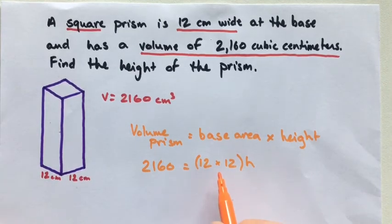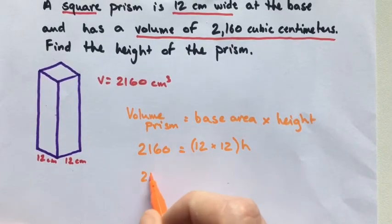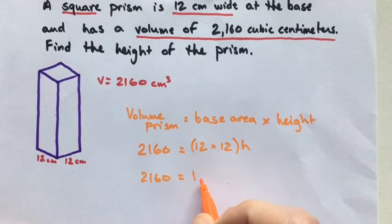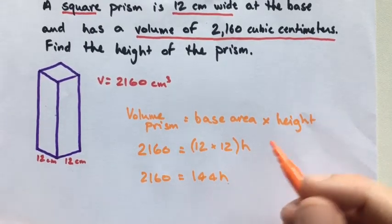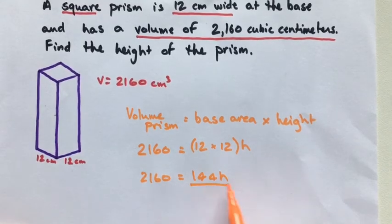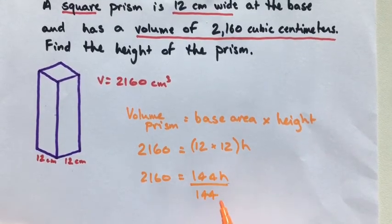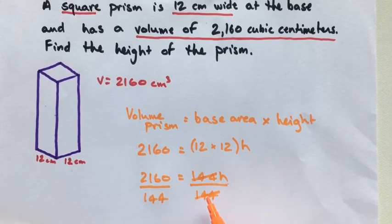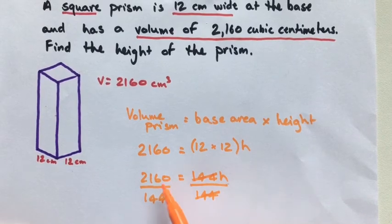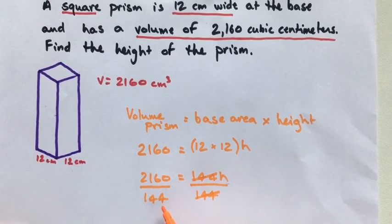So let's work out my parentheses here. 2160 is equal to 144 times h. We need to just get h isolated, so we're going to divide by 144, divide by 144, these are going to cancel. So we're left with h is equal to 2160 divided by 144, and that's going to be 15 centimeters is our height.